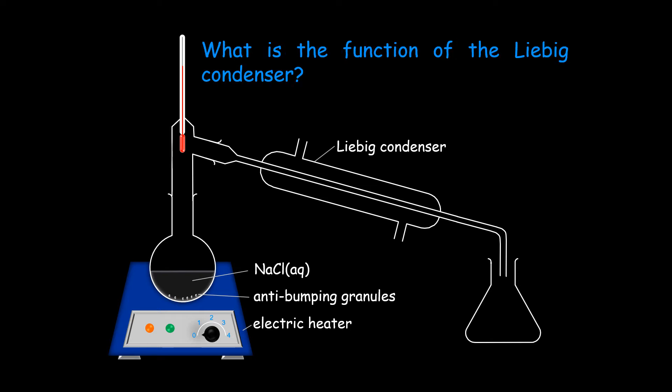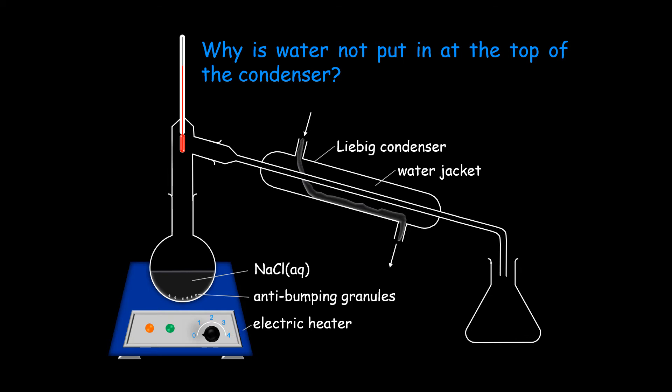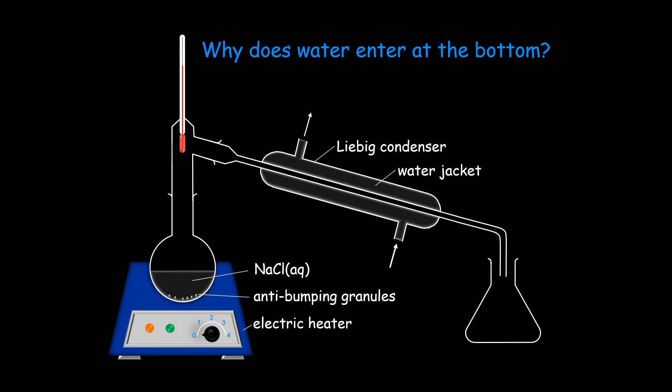The condenser condenses the steam back to liquid. The cold water goes in at the bottom and out at the top. If we put the water in at the bottom, it completely fills the water jacket, keeping the inner tube cold.